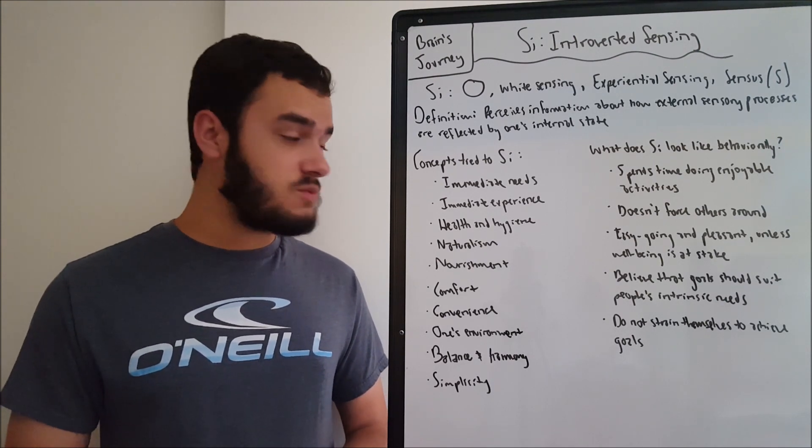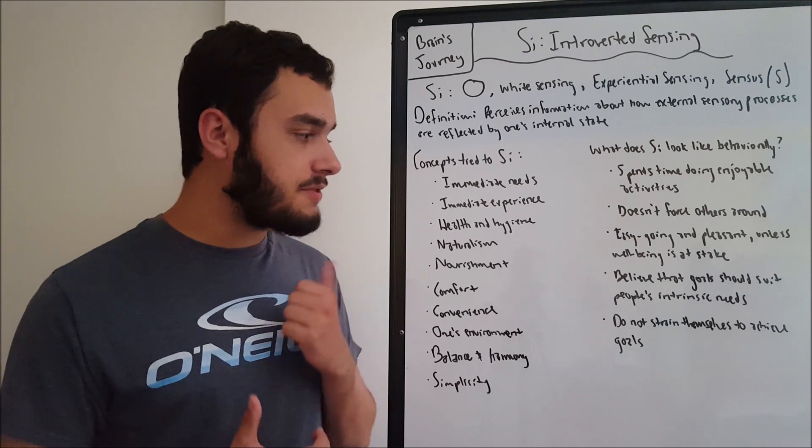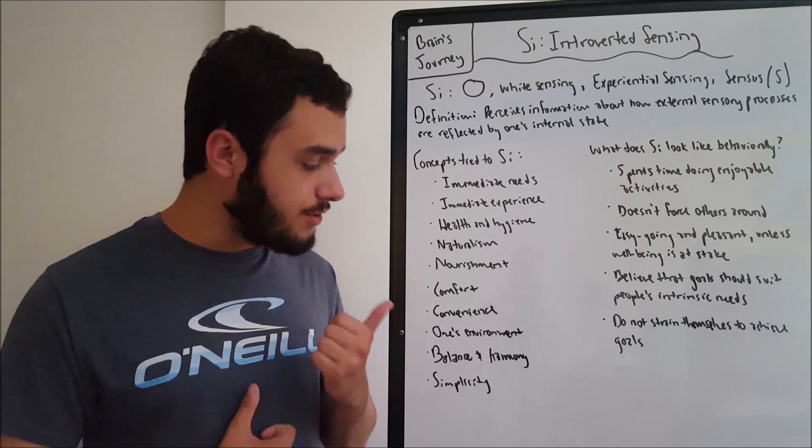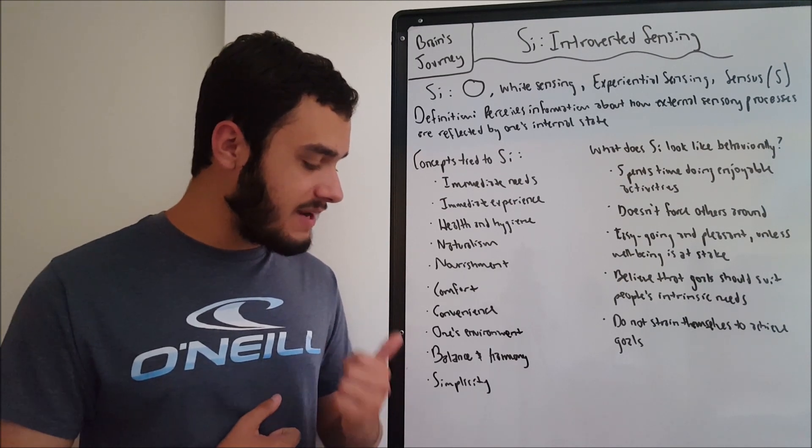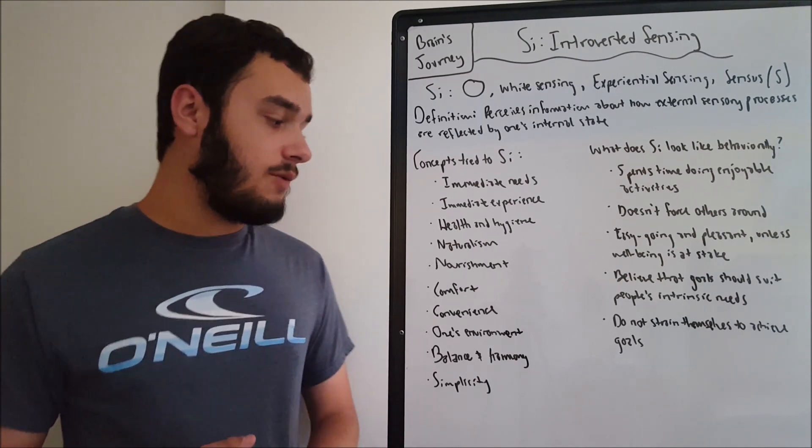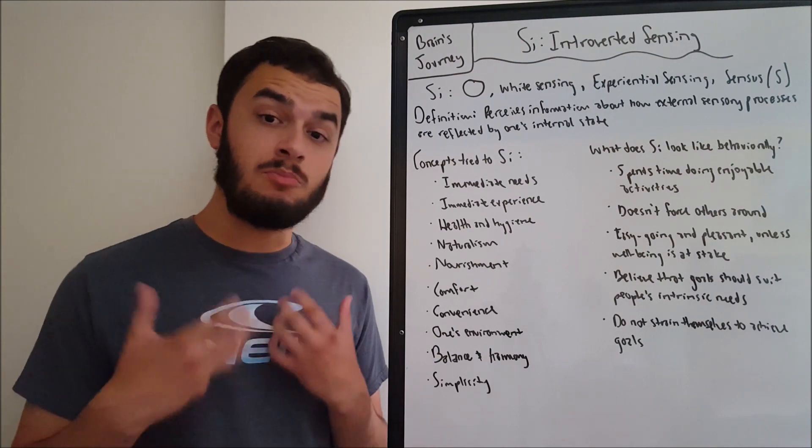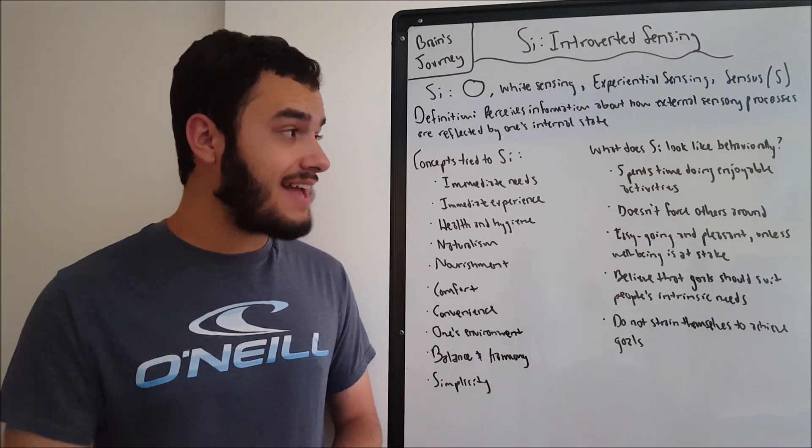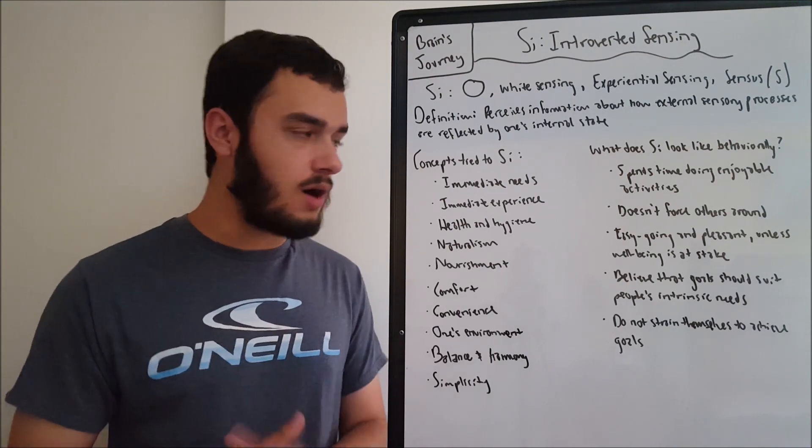So now we've gone over some concepts. Immediate needs, immediate experience, health and hygiene, naturalism, nourishment, comfort, convenience, one's environment, balance and harmony, and simplicity. And now we want to look at how all of that is manifested in somebody's behavior. How does SI look like when it is expressed through one's behavior? Well, we'll talk about it.